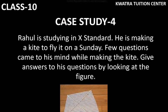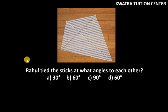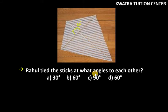The first question is: Rahul tied the sticks at what angle to each other? Looking at the kite, where the diagonals of the kite meet, the angle is 90 degrees. So the correct option here is C.